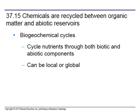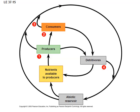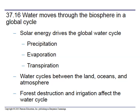Chemicals are recycled between organic matter and abiotic reservoirs. Geochemical cycles cycle nutrients through biotic and abiotic components, and can be local or global. Carbon dioxide is abiotic, but we incorporate its carbon into our bodies, making it biotic. The atmosphere can hold nutrients as an abiotic reservoir. Nutrients available to producers, consumers, detritivores, and abiotic reservoirs — what you need to notice is basically the nutrients don't go away; they stay on Earth and just move around.